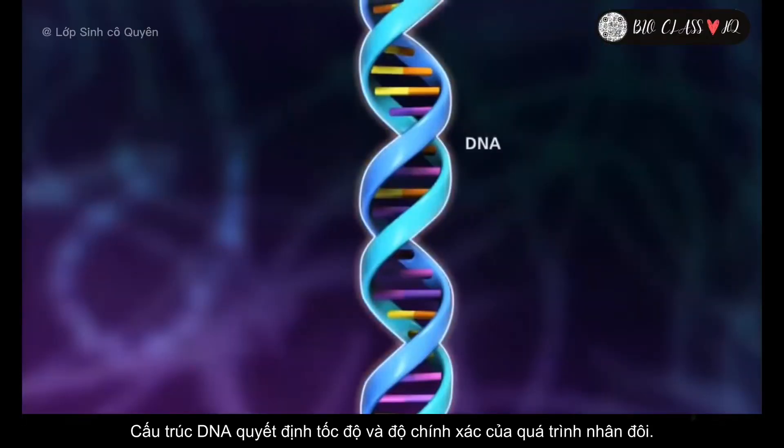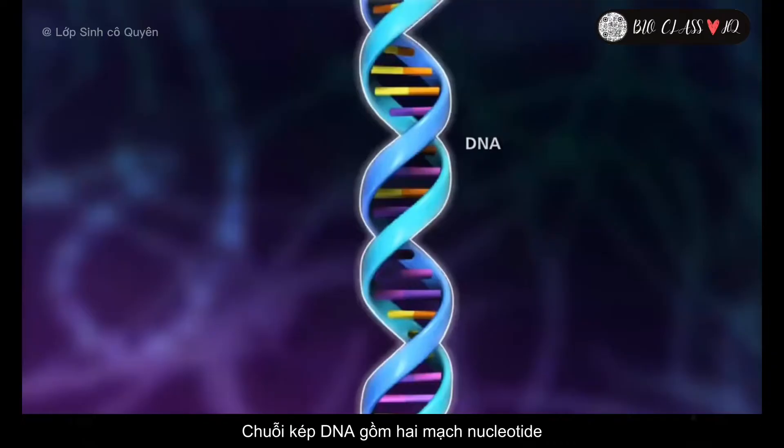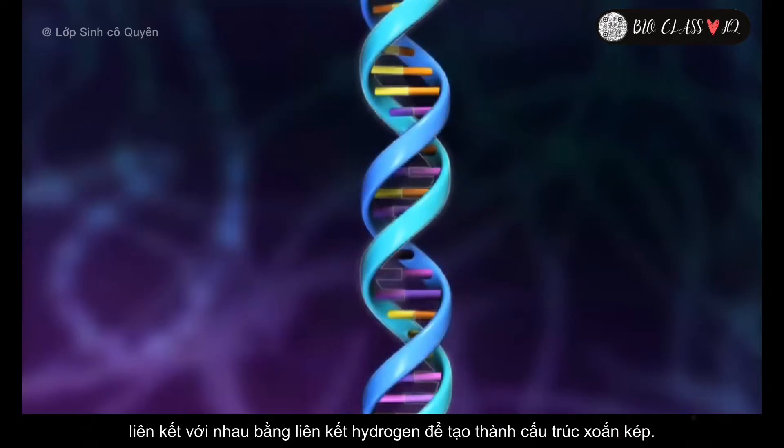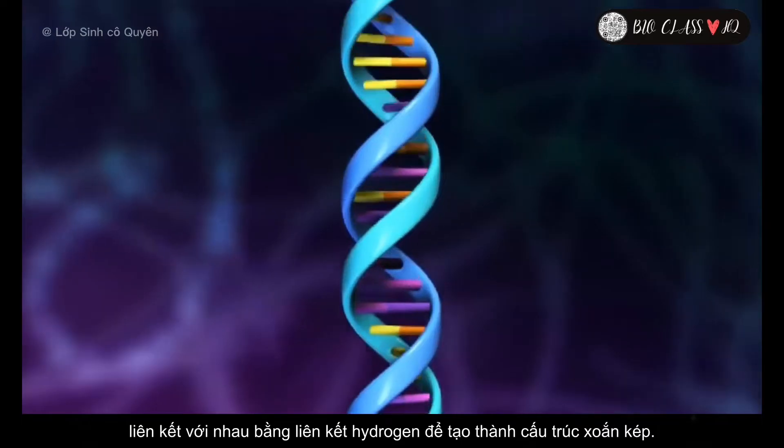The structure of DNA aids in the speed and accuracy of replication. Double-stranded DNA is a polymer of two strands of nucleotides, which are hydrogen bonded to each other to form a double helix.